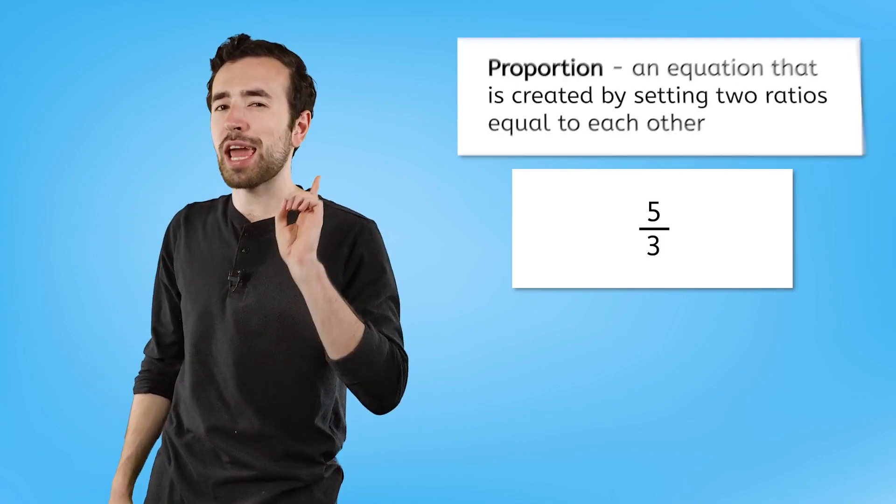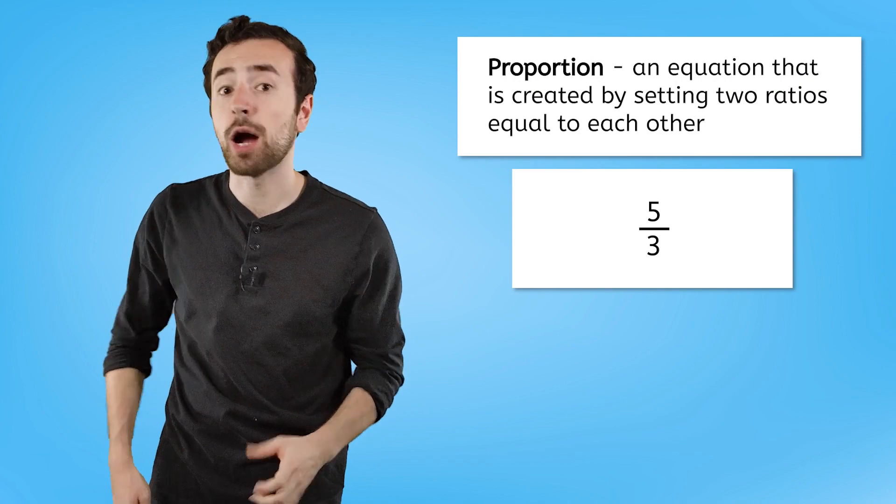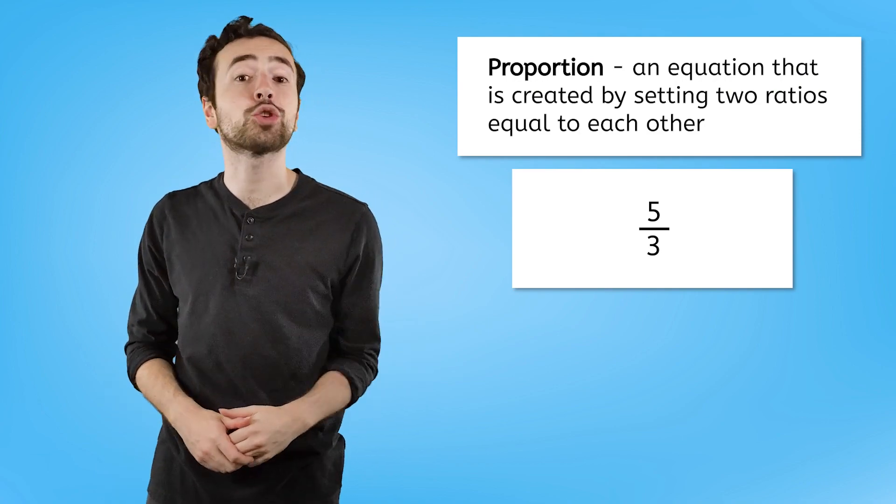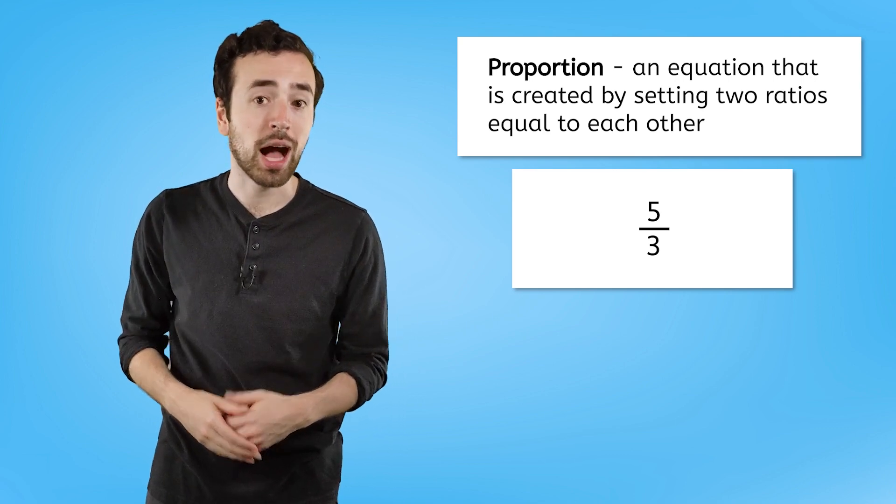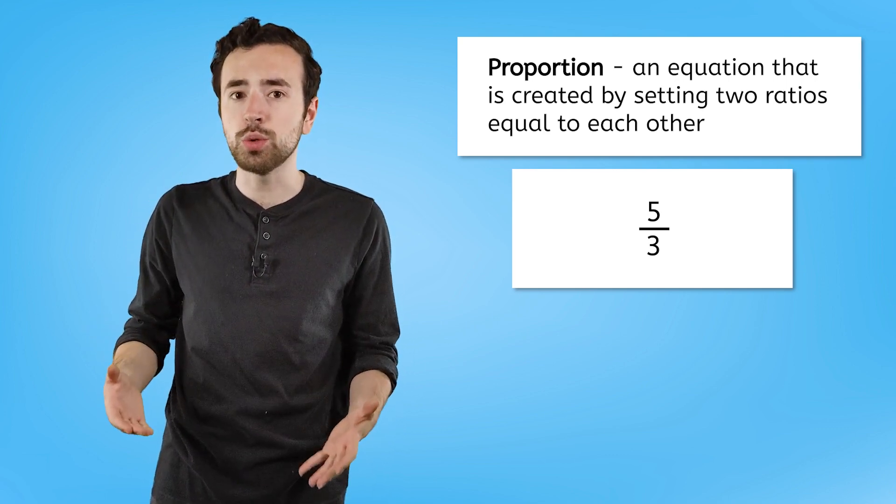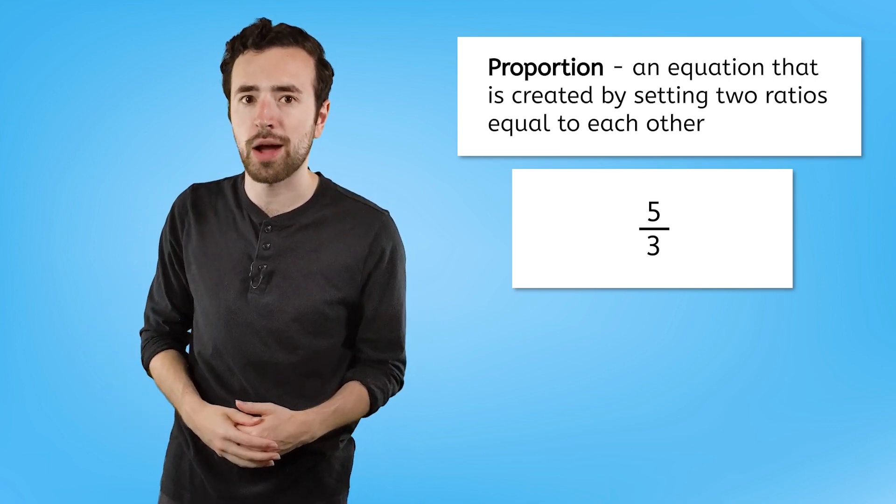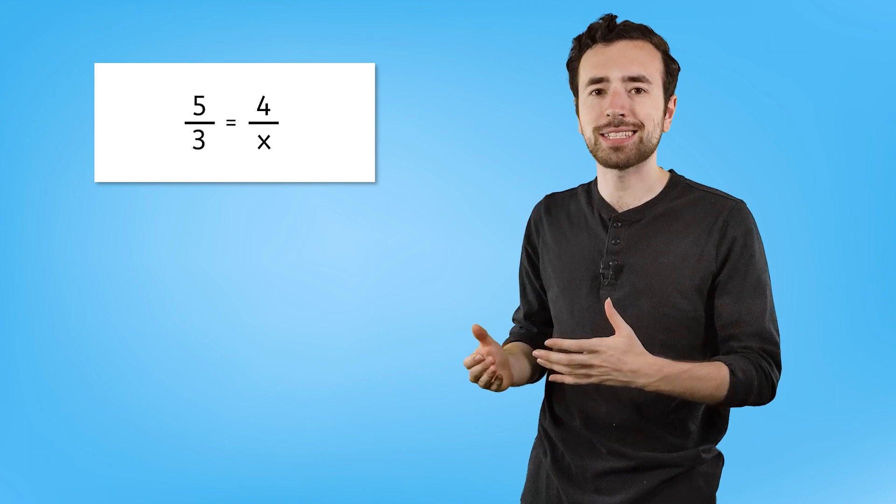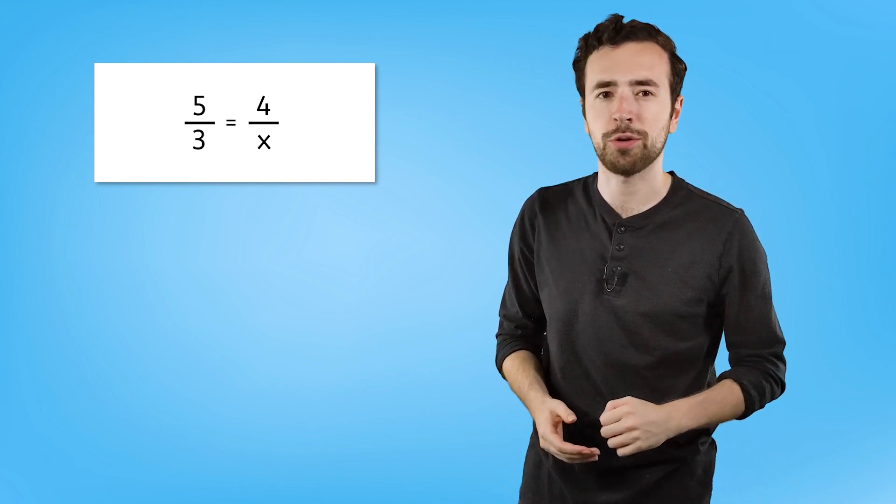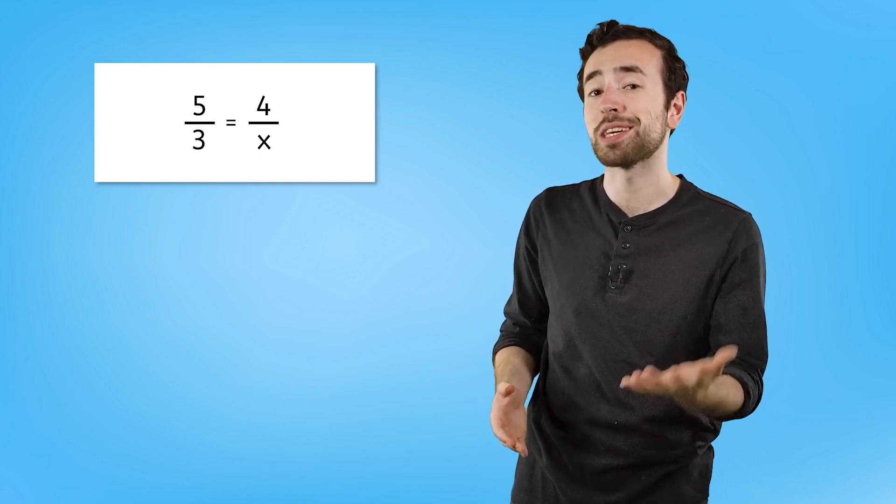Oh, I need to use a proportion here. A proportion is an equation that is created by setting two ratios equal to each other. I want to know how much water to use to go with my four cups of flour. So the ratio I'm trying to use looks like this, and I can solve for x by setting it equal to the recipe ratio. Let's take a look at how we can solve proportions like this together.